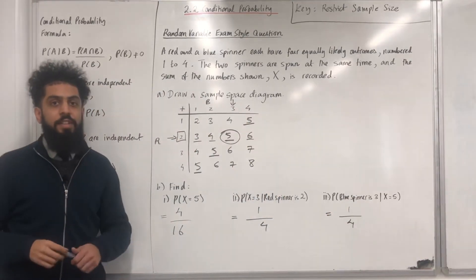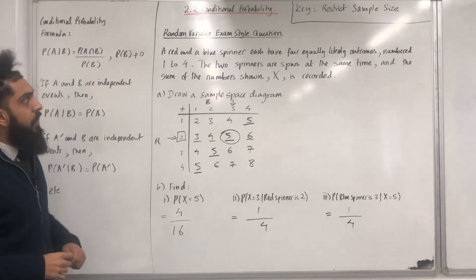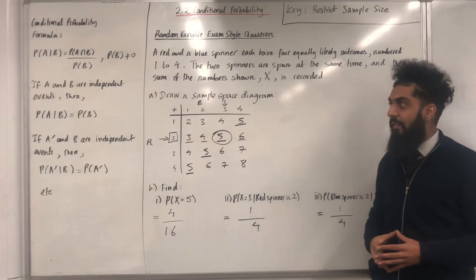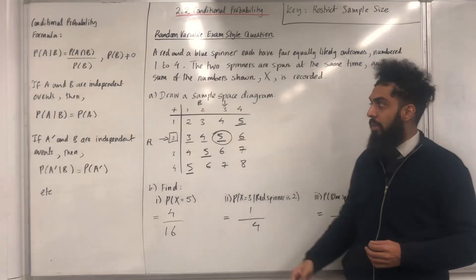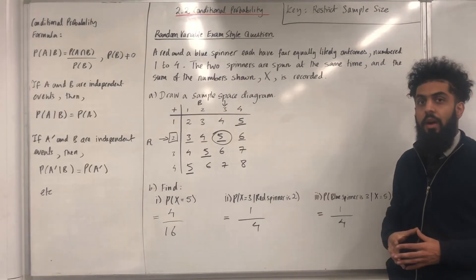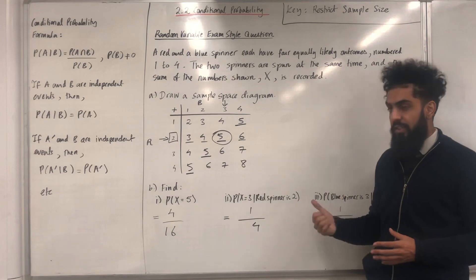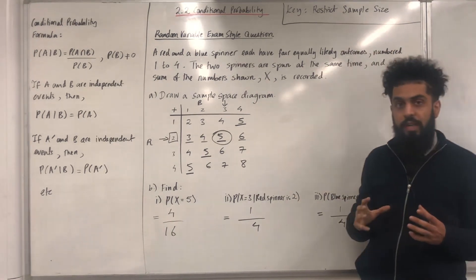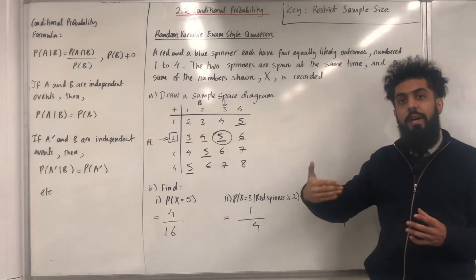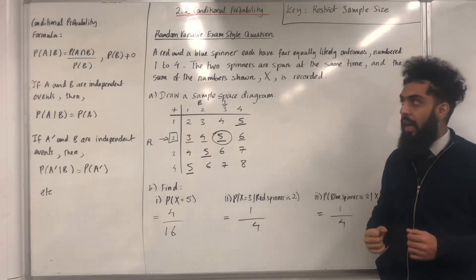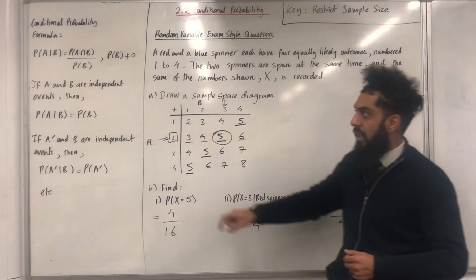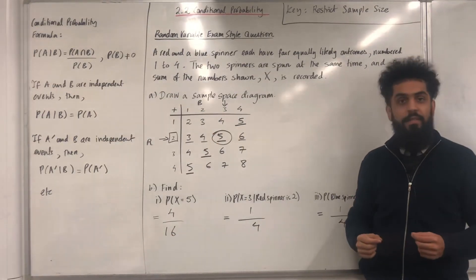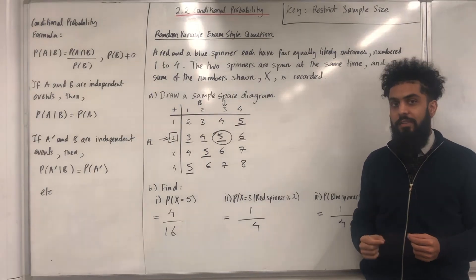That completes the random variable exam style question. You might be wondering why we haven't applied the conditional probability formula for these questions — the answer is that for these types of questions it is much easier to use the method of restricting the sample size. However, later in the chapter there will be more difficult questions where it is better to use the conditional probability formula. If you found this video useful, please don't forget to subscribe.